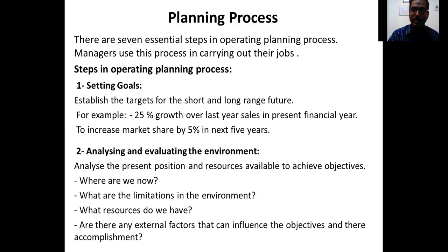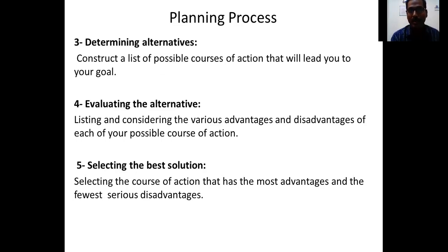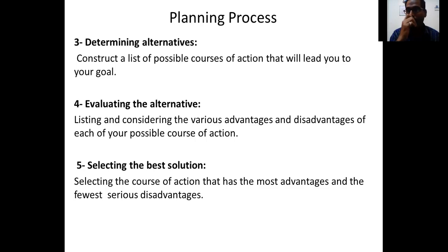The third step is determining the alternatives. We construct a list of possible courses of action that will lead to our goal. Once we identify the necessary resources and favorable opportunities, if certain aspects from the environment are against us, we determine whatever alternatives we have in order to still achieve our goal.